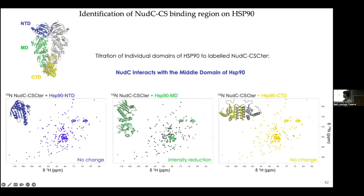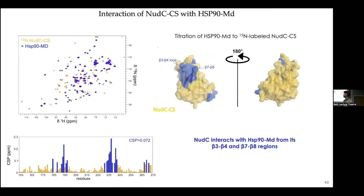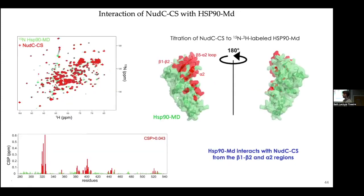When we add either the NTD or CTD region of HSP90 we have no effect, but when we add the middle domain we lose all intensity, confirming the middle domain is the binding site. We performed actual titrations, mapped chemical shift perturbations on the sequence and structure, and observed a very nicely delineated surface as the binding site to the middle domain of HSP90. The reverse titration on the middle domain — using our HSP90 methyl assignment — also gave very strong shifts that, when plotted on the structure, define a well-delineated interface around the beta1-beta2-alpha2 region of HSP90.